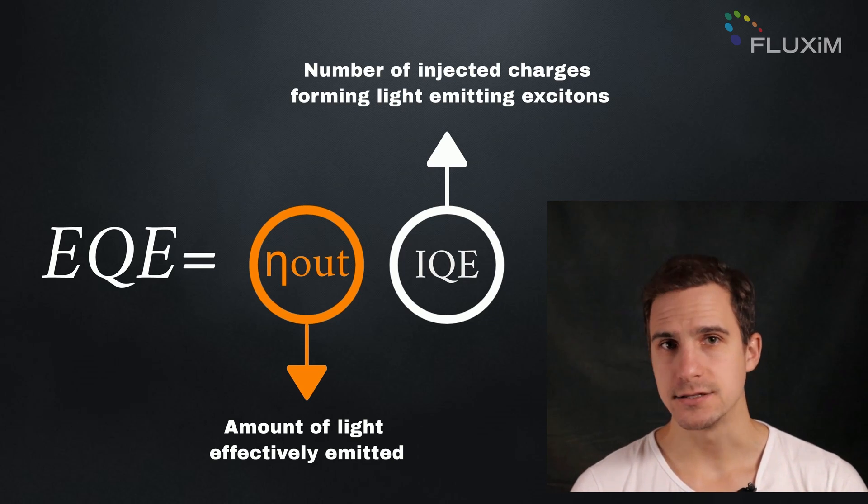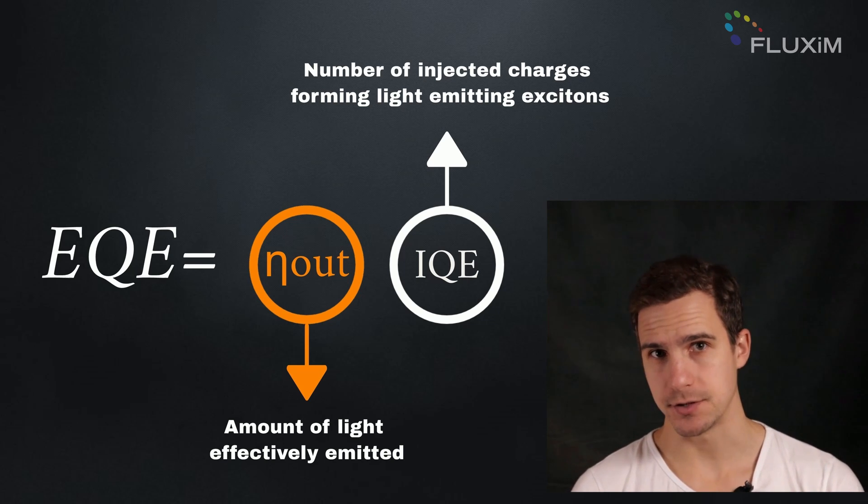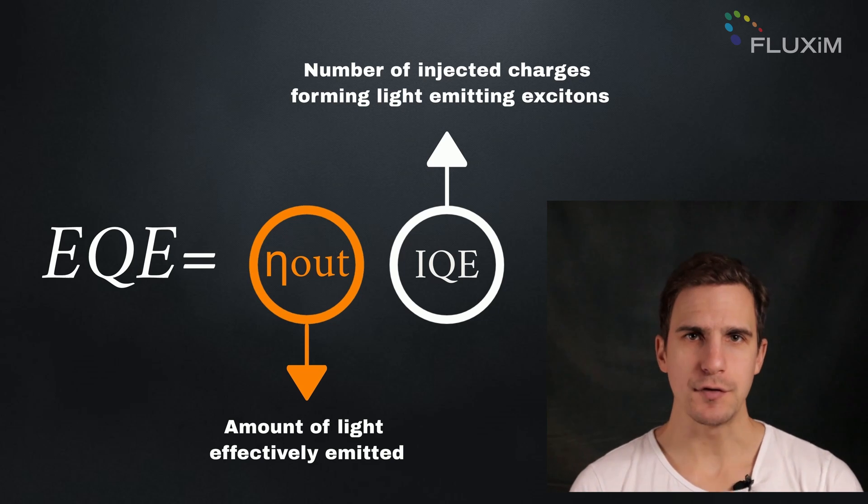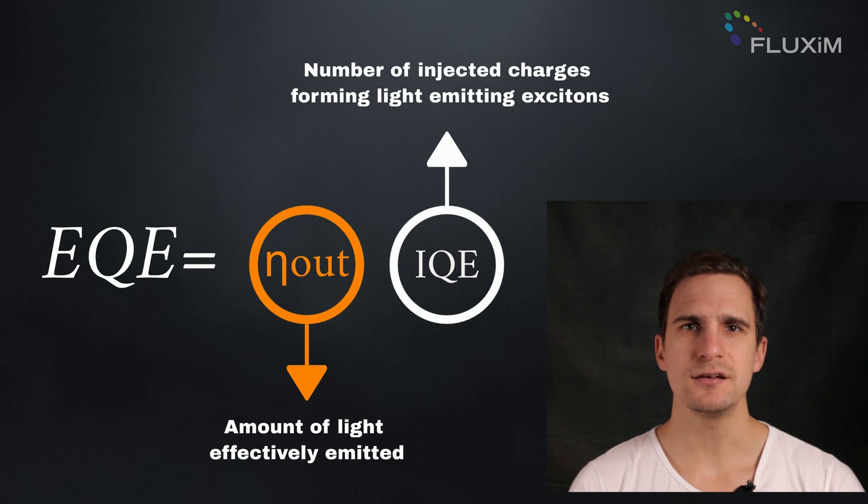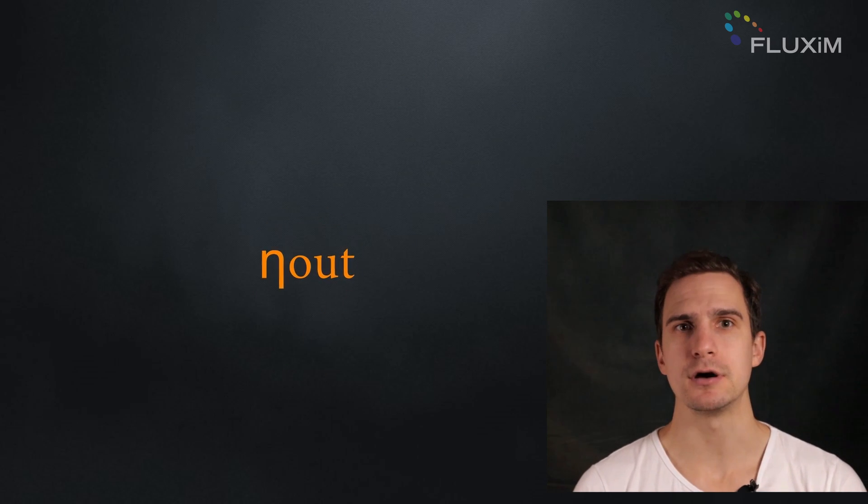It follows that the simplest form we can use is EQE equivalent to the product of IQE by the outcoupling efficiency. In this way, it is easy to see that if we already reach an IQE of 100%, then we need to focus on the light outcoupling efficiency to increase the EQE of OLEDs.